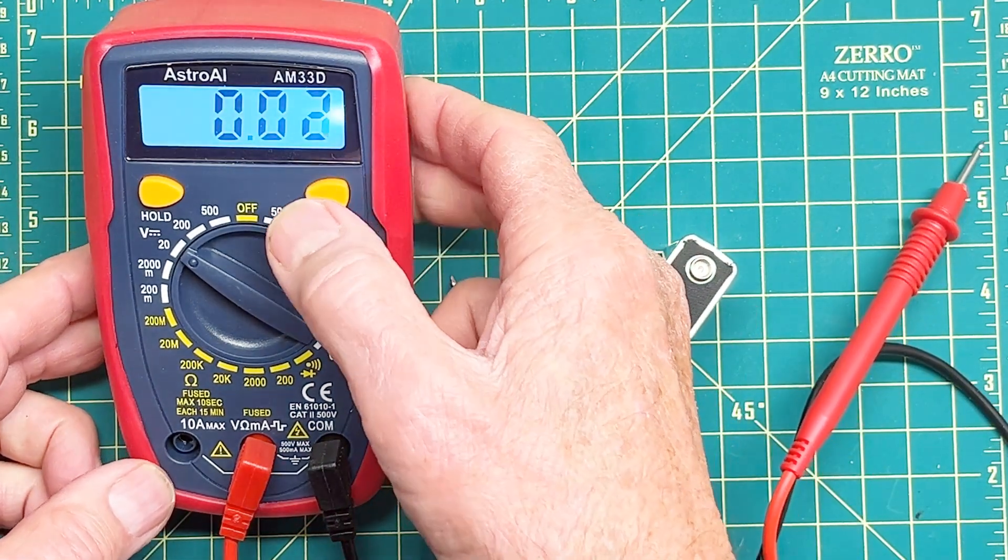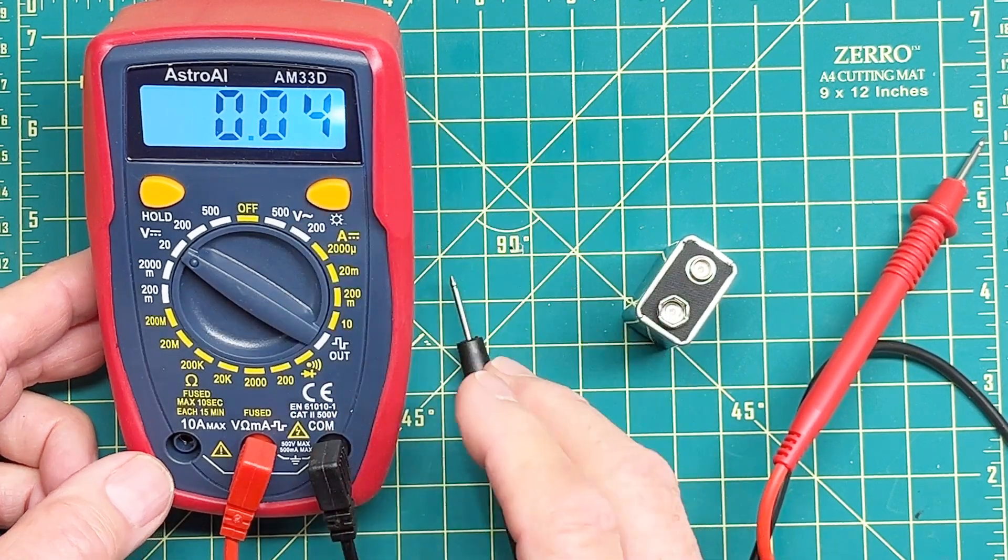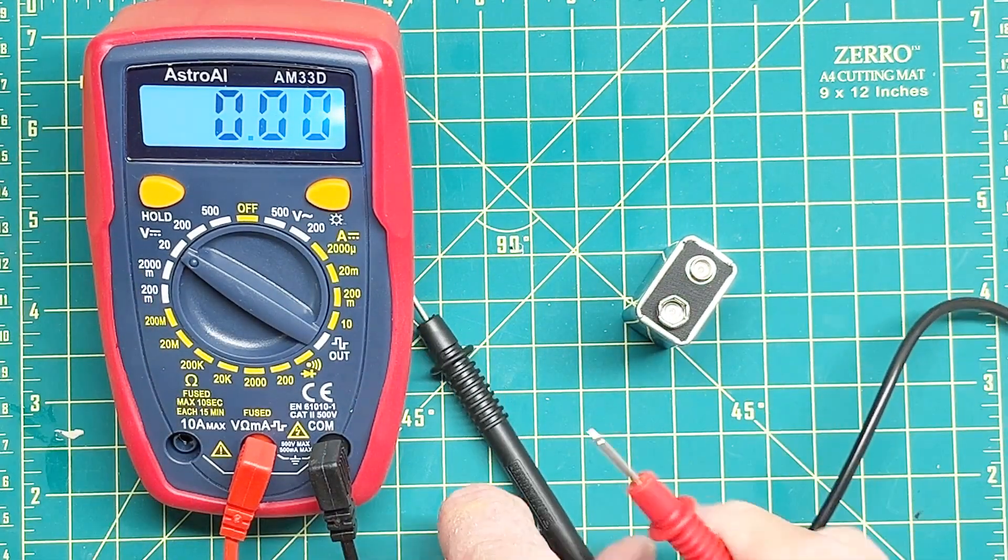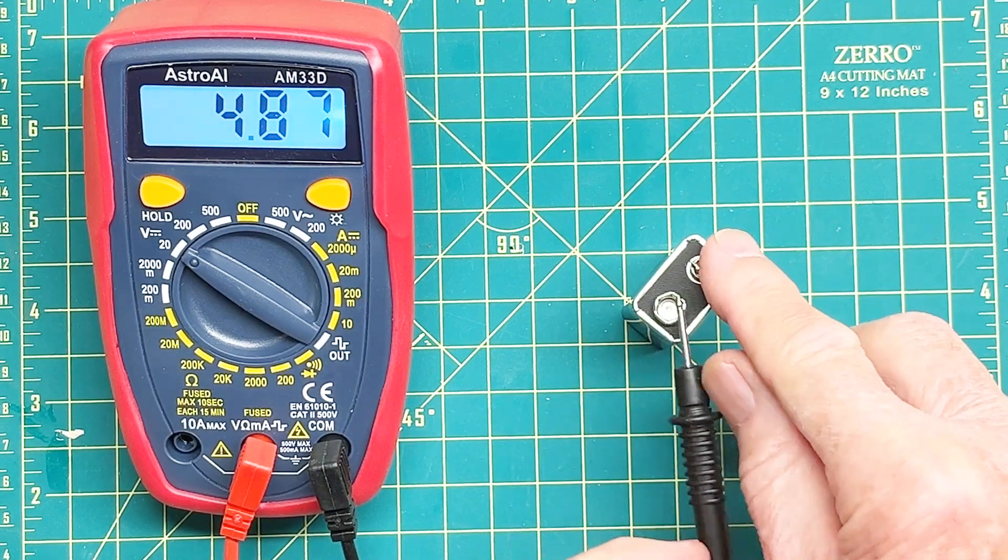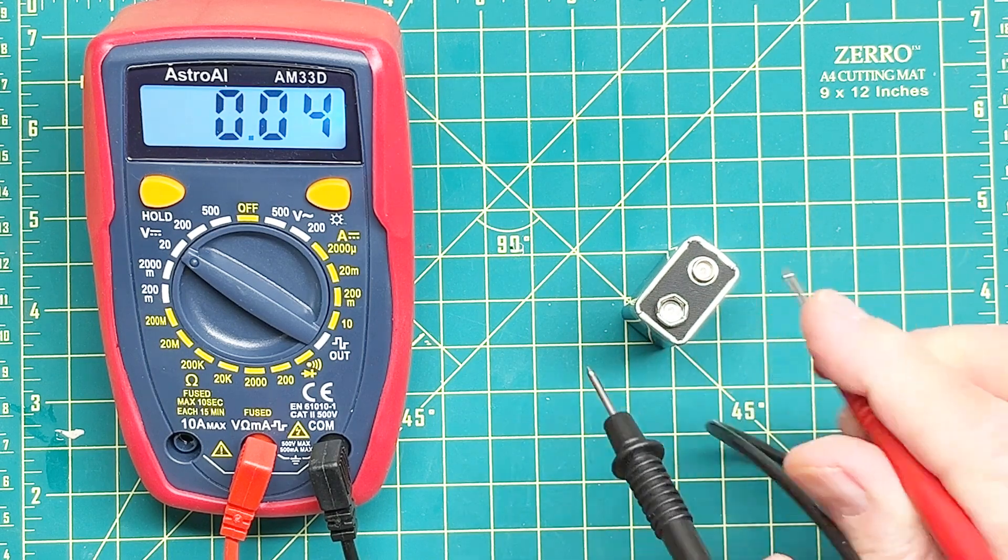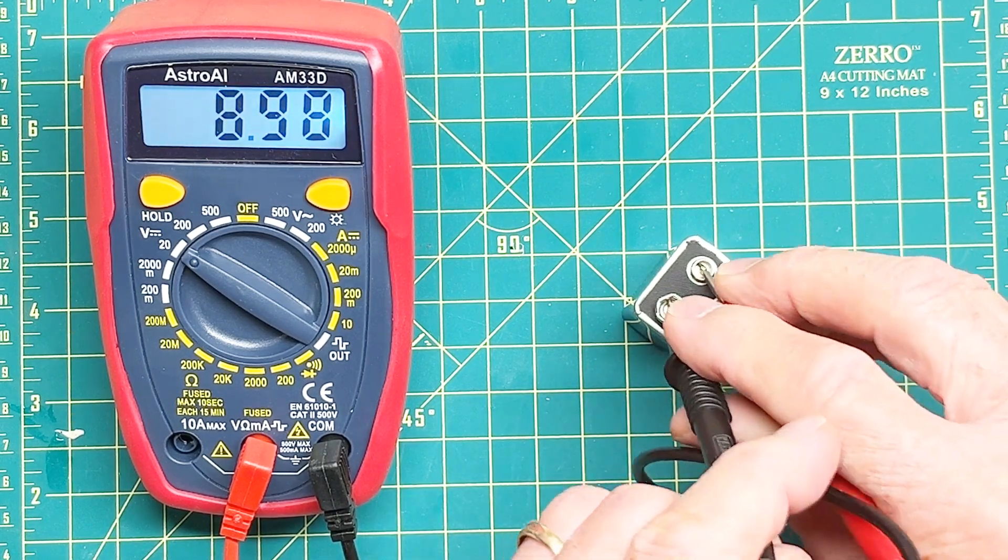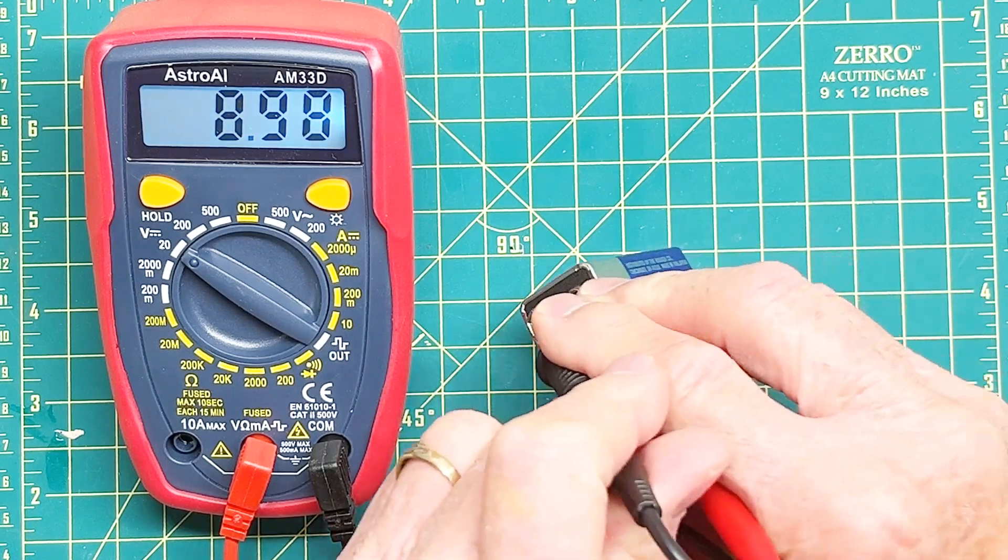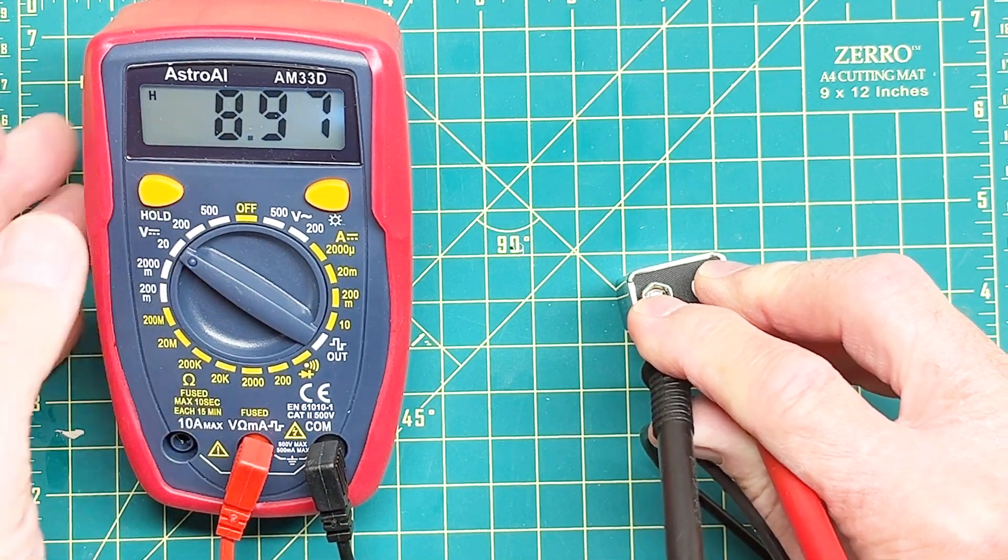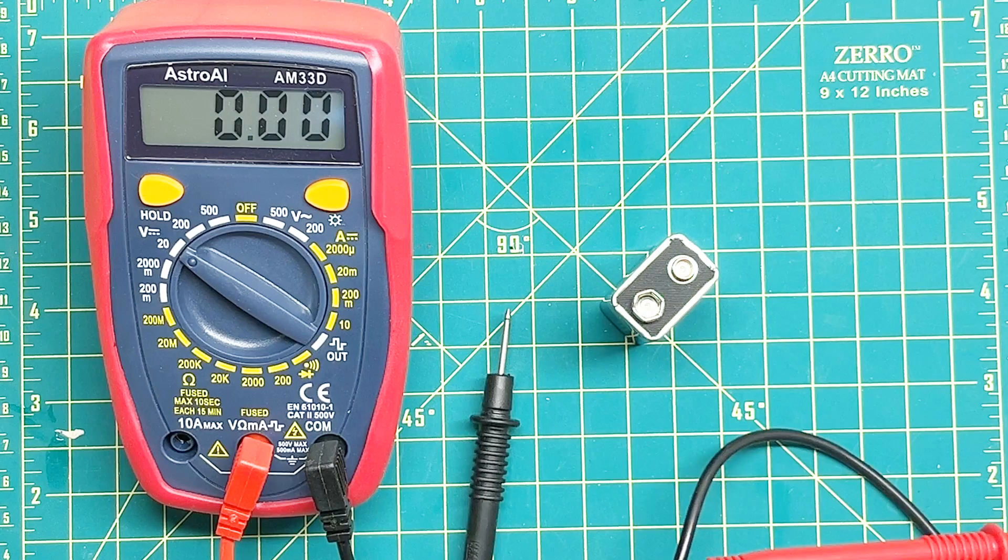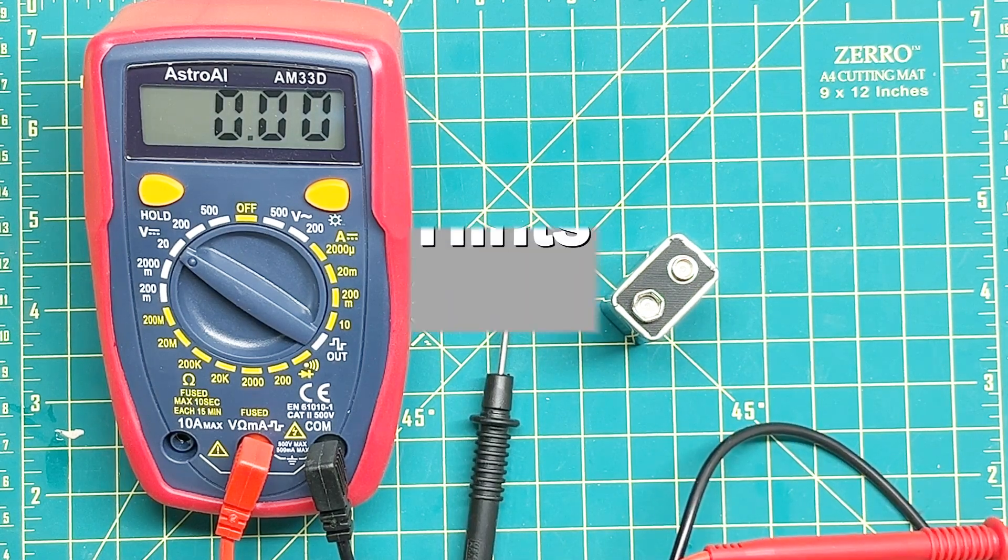This also has a light. And if you want to, if your measurements are jumping around, which they're not in this case, but you can press the hold button to hold it. So it's very nice and relatively inexpensive, very inexpensive.